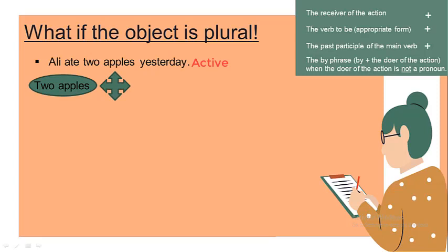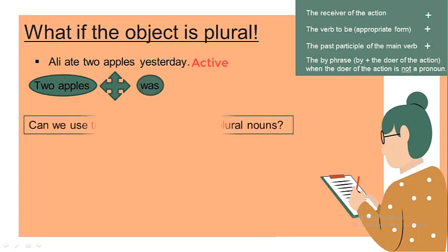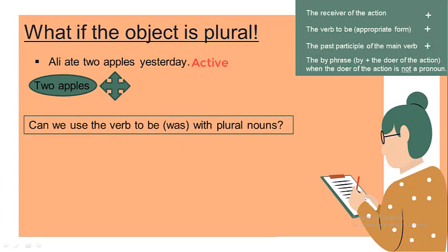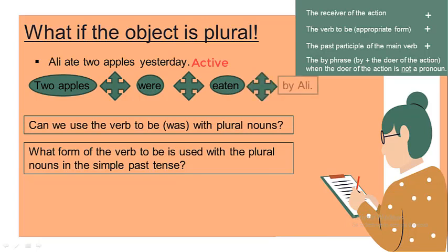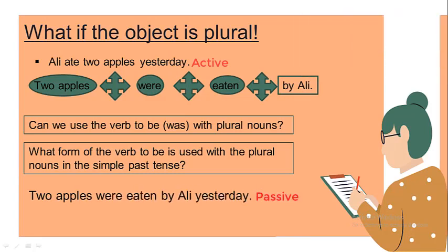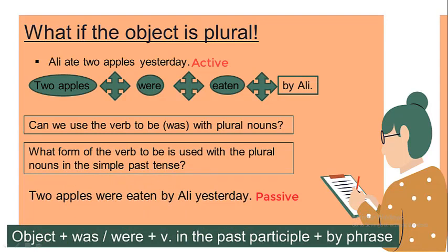And then comes the verb to be. In the previous sentence we used was, but can we use was with plural nouns? Of course not. So what form of verb to be will we use with plural nouns in the simple past tense? Great job — we'll use were. Two apples were. And then the verb in the past participle: eaten, and the by phrase: by Ali. And the sentence will be: two apples were eaten by Ali yesterday. So now I want you, my students, to deduce the general form of the passive voice in the simple past tense. The form is: the object plus was or were. We use was if the receiver of the action is singular, and we use were if the receiver of the action is plural. And after that comes the verb in the past participle, then the by phrase.